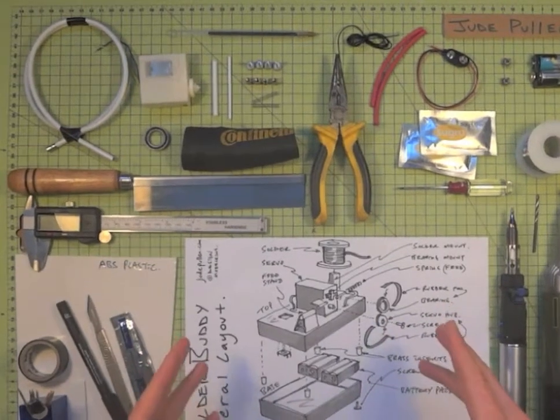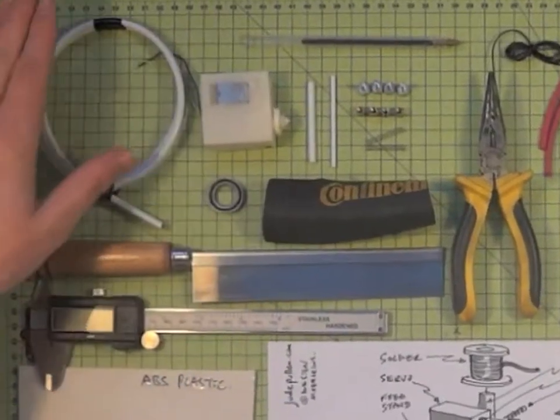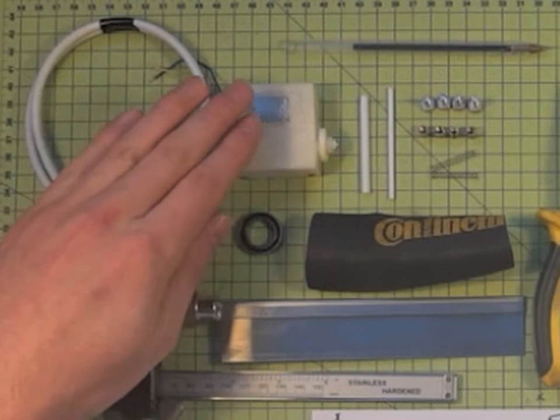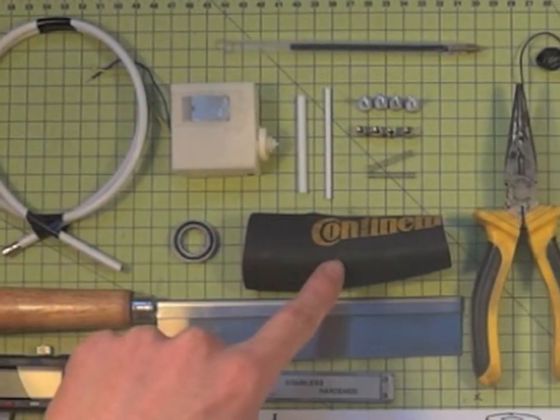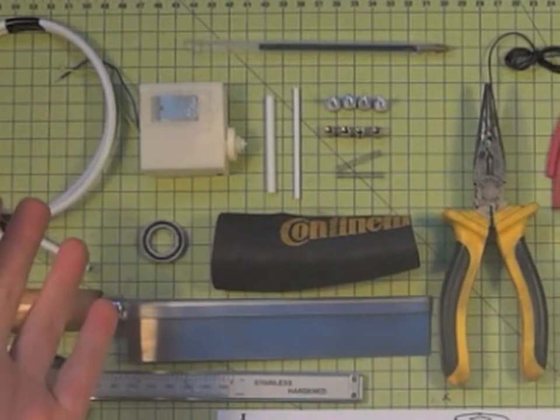So basically what we're going to do is take a bicycle brake cable and a servo motor and a bearing, a bit of old bicycle inner tube although an elastic band would do as well.